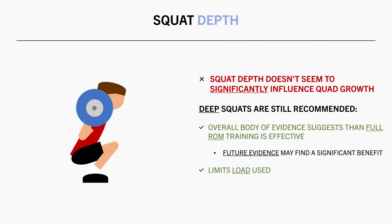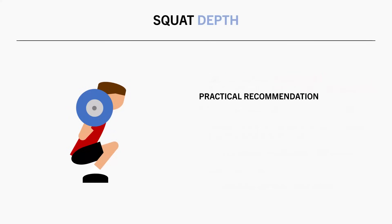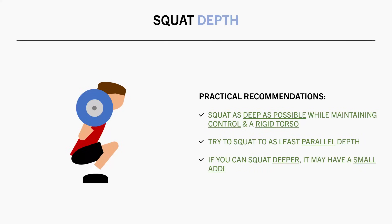I would still personally recommend deep squats. Even if muscle growth isn't significantly greater, the load used is significantly less with deep squats, which limits overall joint stress and axial loading on the spine, making it less globally fatiguing without compromising hypertrophy. So I'd recommend squatting as deep as you can while maintaining control and a rigid torso position — try to squat to at least parallel, and if you can go lower it might be slightly better.